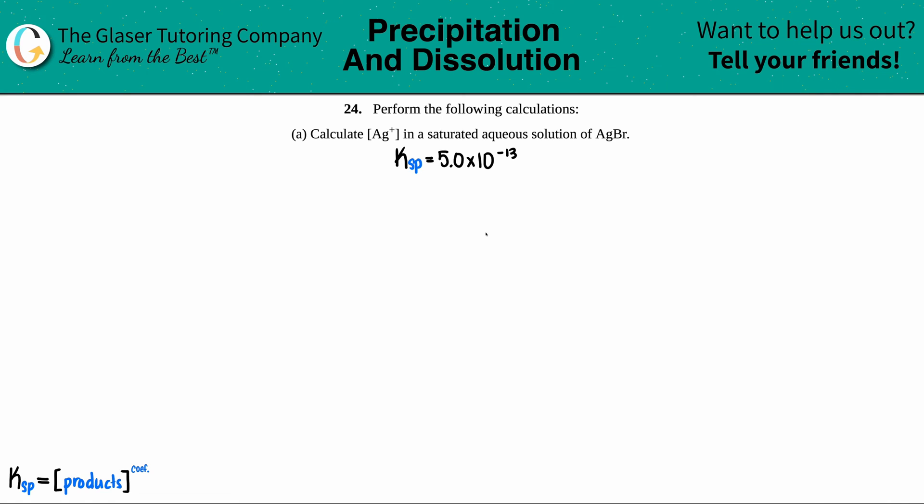Number 24, perform the following calculations. It's easy enough. Then we have letter A. Calculate the Ag+ concentration in a saturated aqueous solution of AgBr.